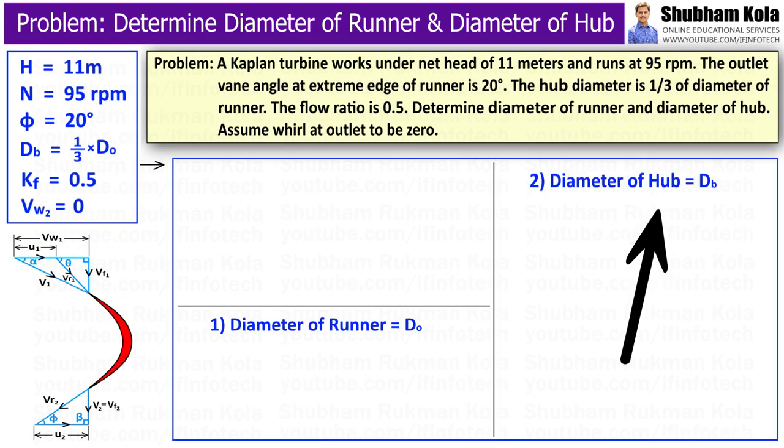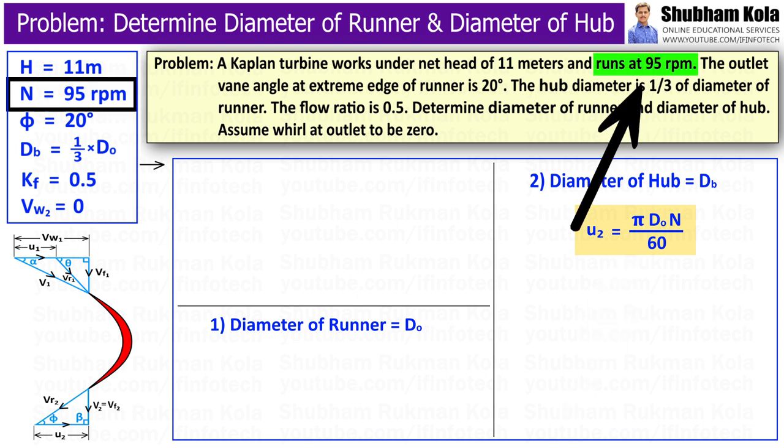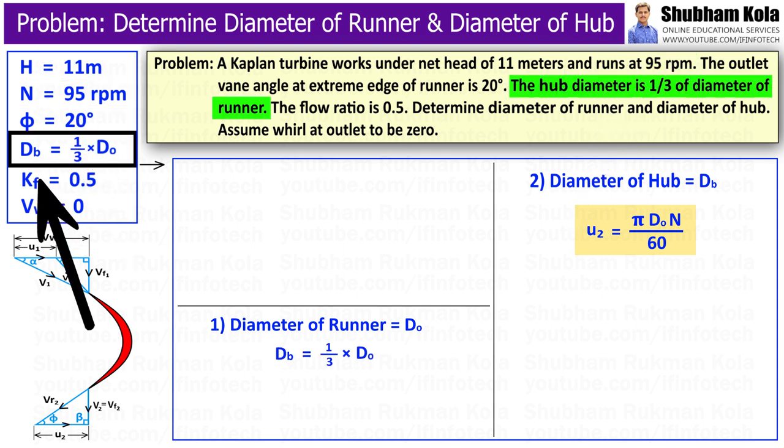So, to calculate diameter of hub for Kaplan turbine, I will use equation of tangential velocity at outlet, that is u₂, and tangential velocity can be calculated from this formula, that is equal to πD₀N divided by 60. In the question, the rotational speed N is given as 95 rpm and it is specified that diameter of hub, that is Dh equals 1/3 diameter of runner, that is D₀, means outer diameter of runner.